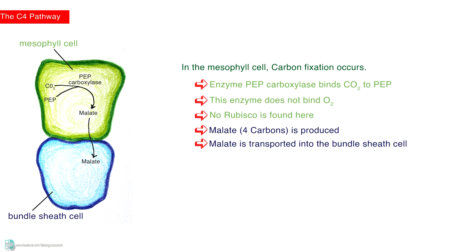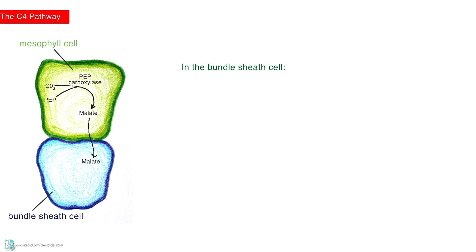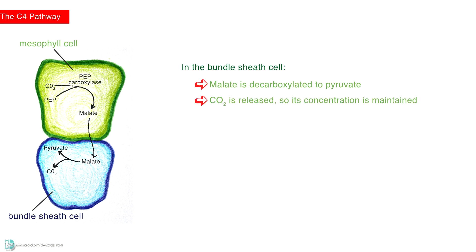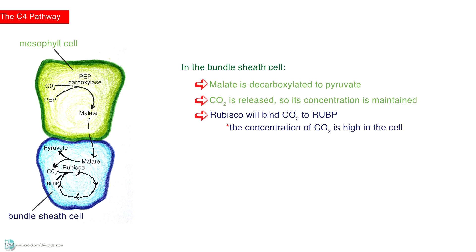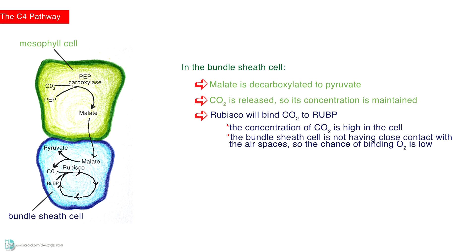Malate is transported into the bundle sheath cell. In the bundle sheath cell, malate is decarboxylated to pyruvate. Carbon dioxide is released, so its concentration is maintained. Rubisco will bind carbon dioxide to RuBP, as the concentration of carbon dioxide is high in the cell. And since the bundle sheath cell does not have close contact with the airspaces, the chance of binding oxygen is very low. The Calvin cycle occurs as usual, but photorespiration will not.